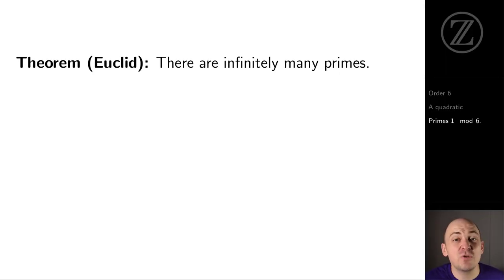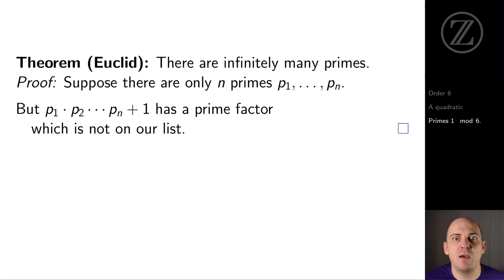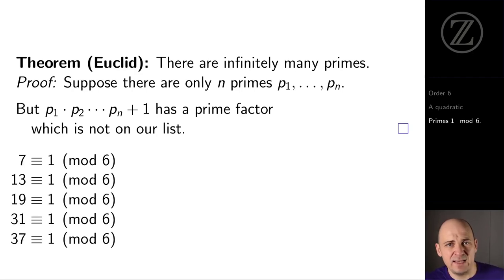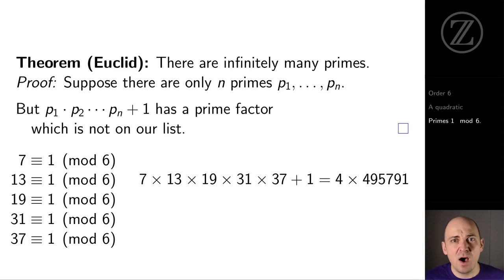How do we show that there are infinitely many primes in the first place? Well, given a list of primes, we can always produce another prime by multiplying together all the primes on our list and adding 1. And if we do this with primes that are 1 mod 6, we do get a prime that wasn't on our list, but it isn't necessarily 1 mod 6. For example, 7 and 13 and 19 and 31 and 37 are all 1 mod 6, but if we multiply them all together and add 1, we get 4 times 495,791. And 495,791 is definitely a new prime, but it's 5 mod 6. So we need to be more careful.